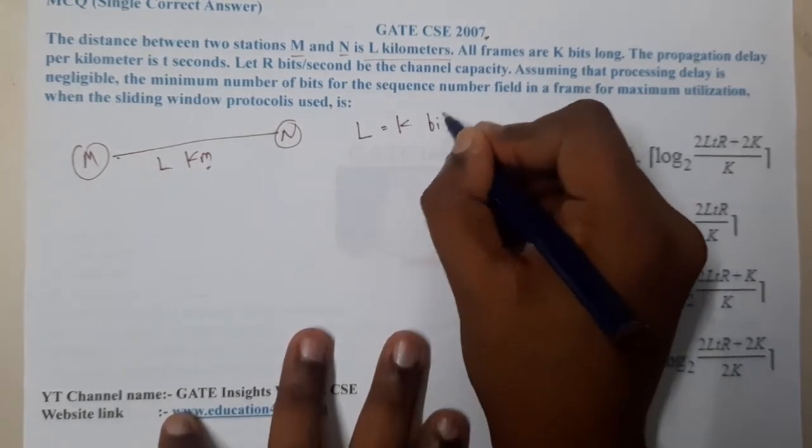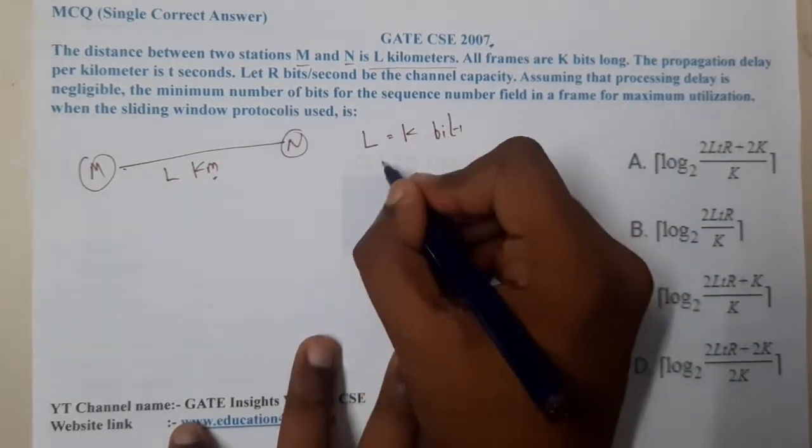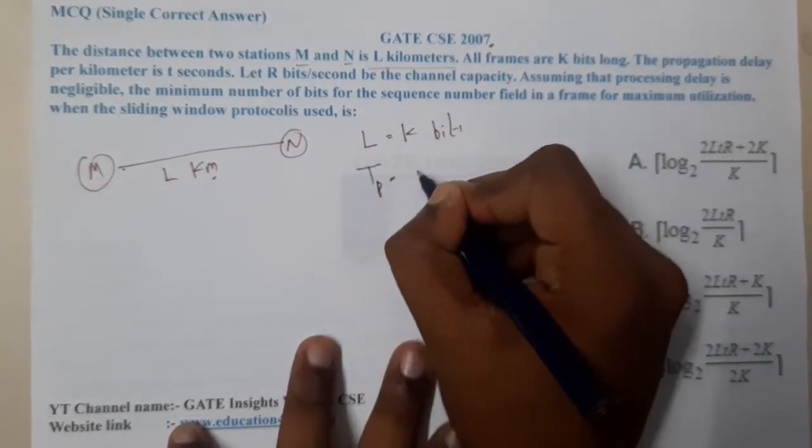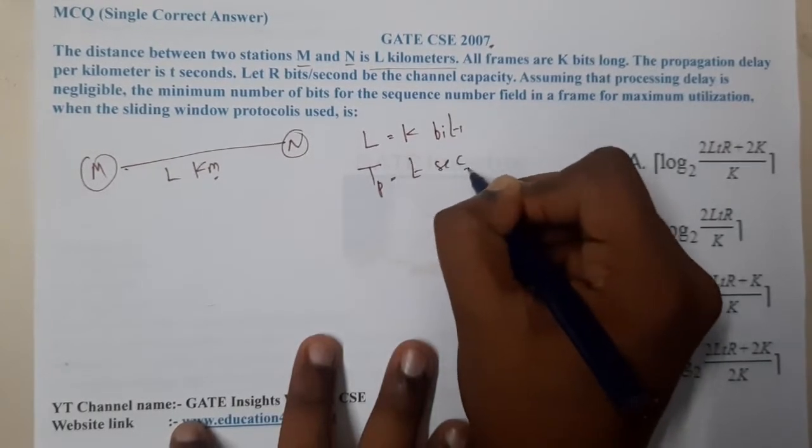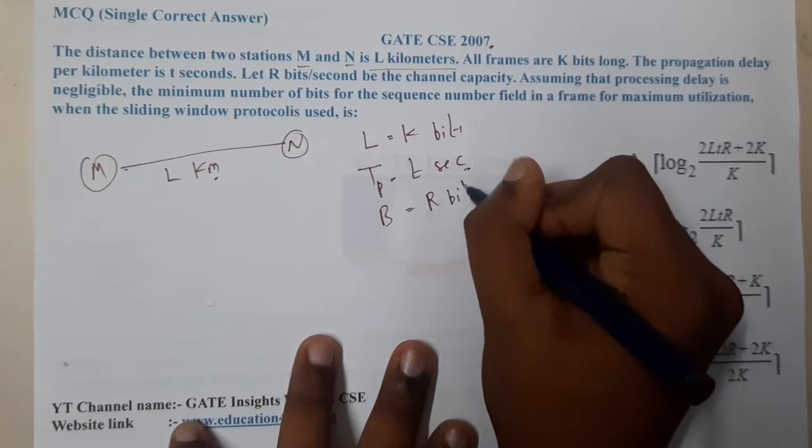All frames are K bits long. So length of a packet equals K bits. The propagation delay per kilometer is T seconds, so they clearly give the value of Tp as T seconds. The channel capacity or bandwidth equals R bits per second.